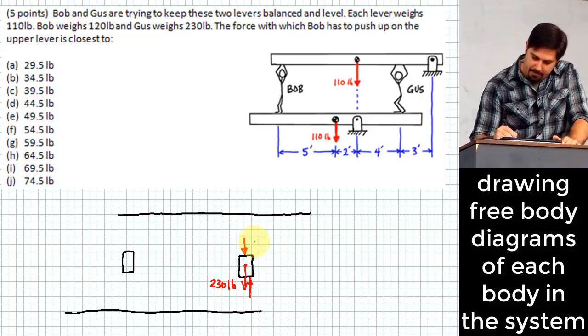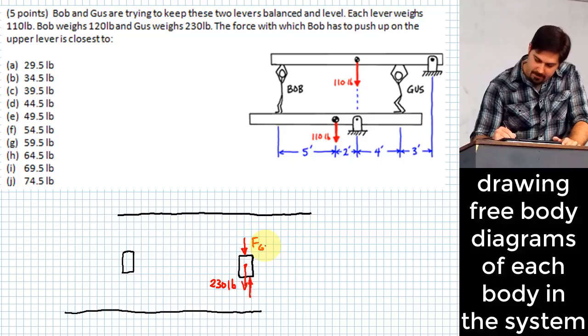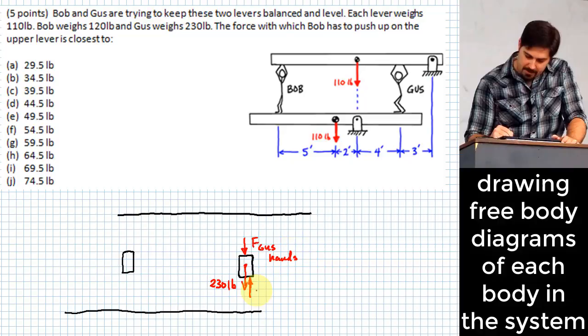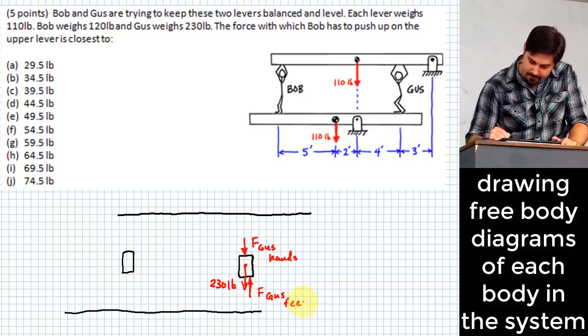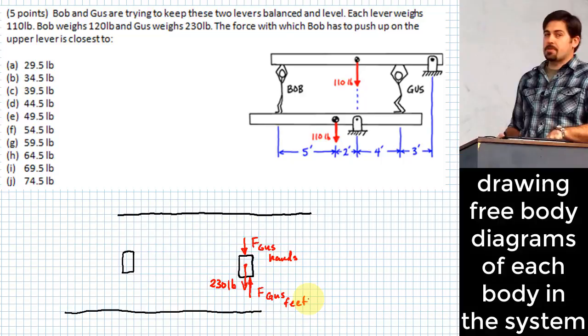Well, let's actually do this. The other things that happens on Gus is that he has his own weight. And then he has the force of the beam pushing back up on him like this. So what is his weight? 230 pounds. That's that one right there. So maybe we'll say up here, this is F_Gus in his hands. This is F_Gus feet.